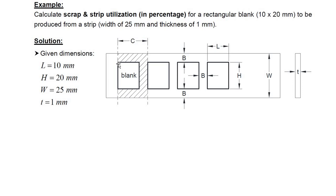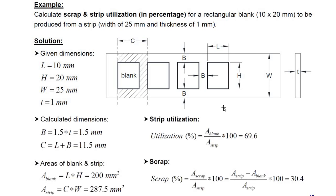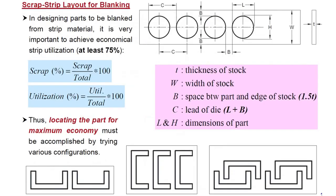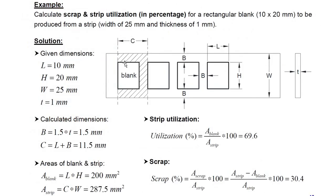We have been given: length of the blank, L equals 10 millimeters, height of the blank, H equals 20 millimeters, width of strip, W equals 25 millimeters, and thickness t equals 1 millimeter. We know the thumb rule. The thumb rule says that B, which is the space between part and edge of the stock, has to be minimum 1.5 times the thickness.